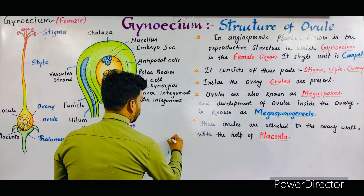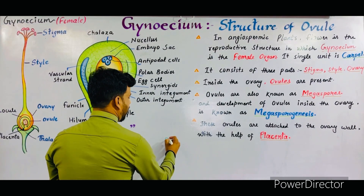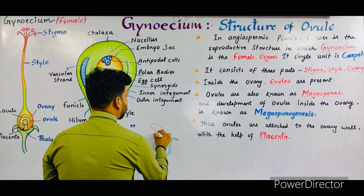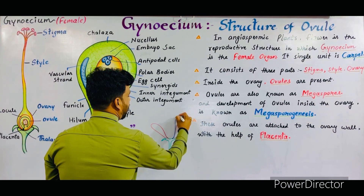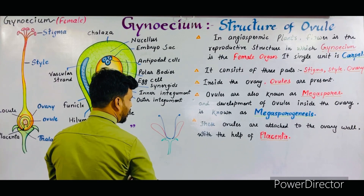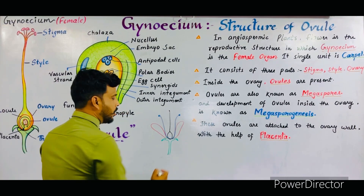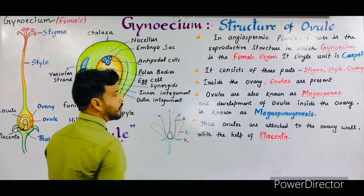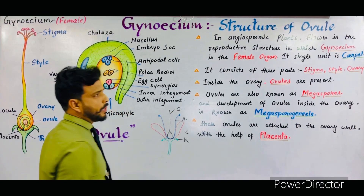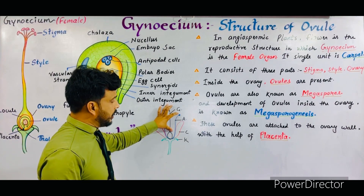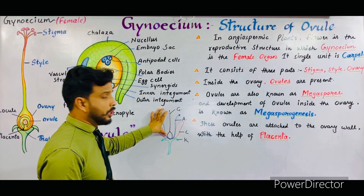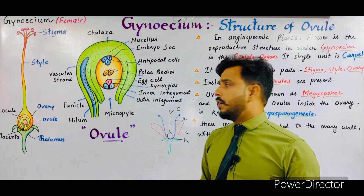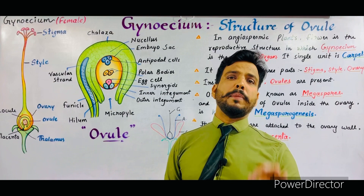In an angiospermic plant, flower is the reproductive organ and in this flower there are four main parts. The outer one is calyx, next is corolla, the male organ is known as androecium, while in the center the female organ is present that is called gynecium. In my last video I described the detailed structure of androecium; in this lecture we will talk about the female part of the flower.